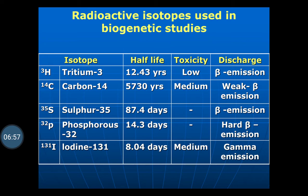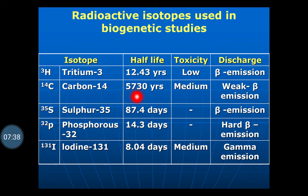Radioactive isotopes used in biogenetic studies are tritium-3, carbon-14, sulfur-35, phosphorus-32, and iodine-131. The half-life of tritium is 12.43 years, and carbon-14 is 5730 years — very large. Generally, carbon-14 is preferred. For sulfur, phosphorus, and iodine it is less. Carbon-14 is the preferred radioisotope for study — its toxicity is medium and it discharges weak beta emissions. If carbon is not suitable, one can go for the other radioisotopes.